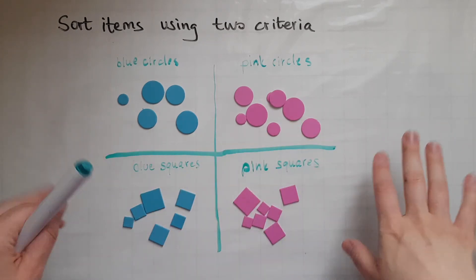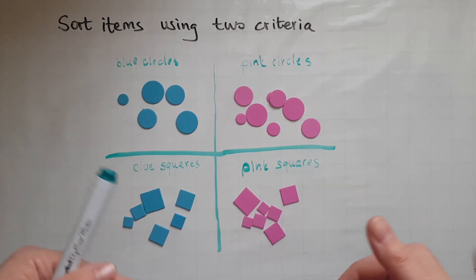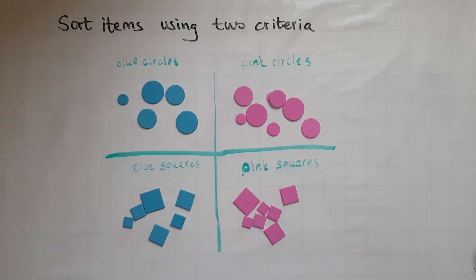I split them by color first and then notice the difference within the colors. So I could see then that there were circles as well as squares. And that's how I sorted them the second time using the second criteria.